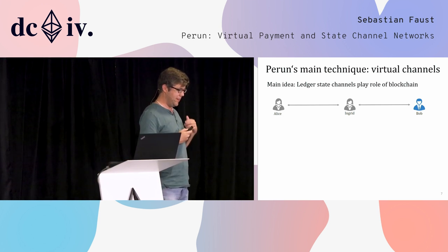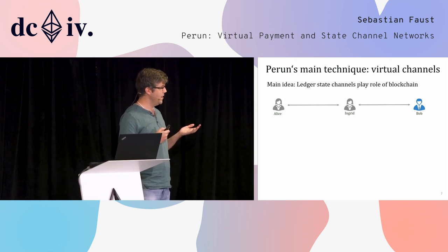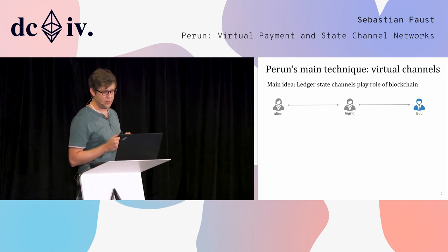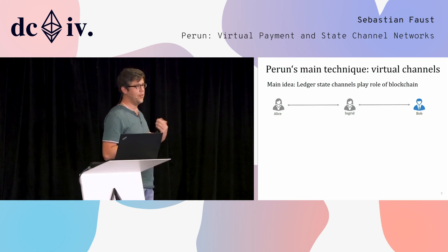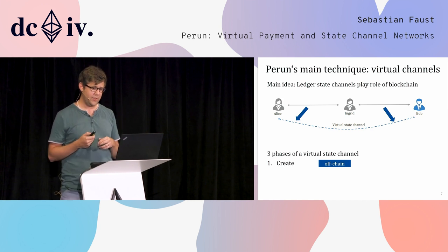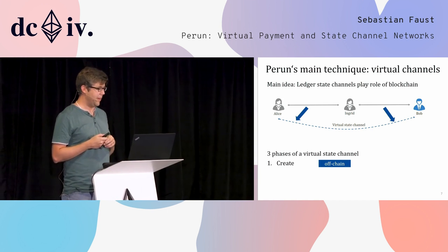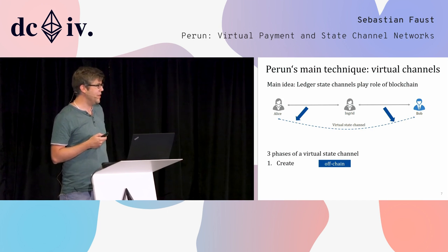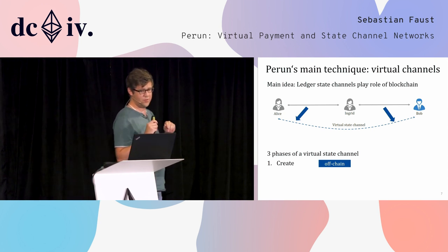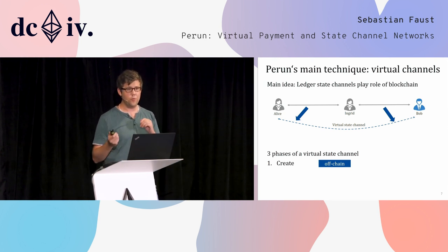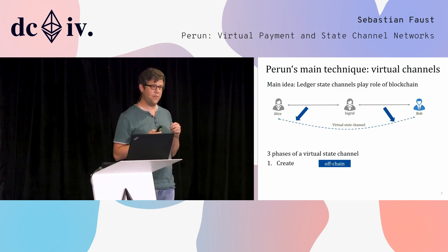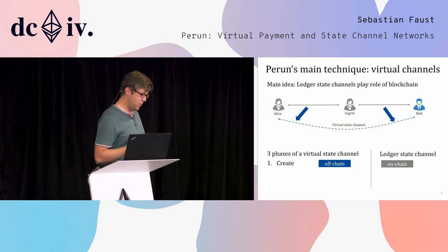The main idea is to think of the underlying ledger state channels as a two-party blockchain. The ledger state channel between Alice and Ingrid and between Ingrid and Bob offer something similar to what the blockchain offers. Creating a virtual state channel also works in three phases. In the creation phase, we run a protocol between Alice, Ingrid, and Bob — three parties are involved. Ingrid takes the role of the blockchain to some extent, and this communication is off-chain, so it can be very fast. Compare this to ledger state channels, where creation was on-chain and potentially took a lot of time.